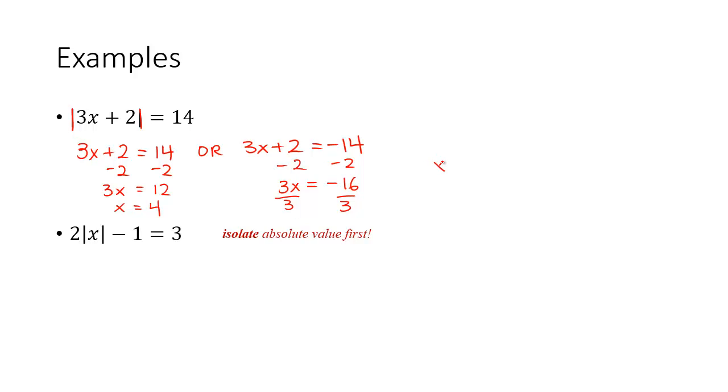So this means x could be either 4 or negative 16 thirds. The solution set could be written as 4 comma negative 16 thirds.